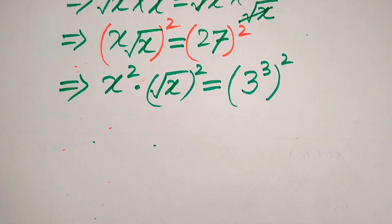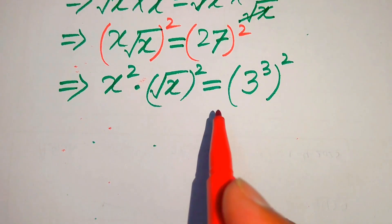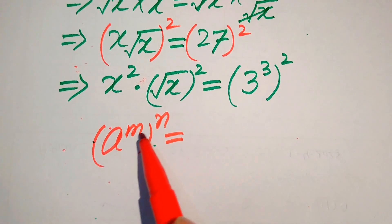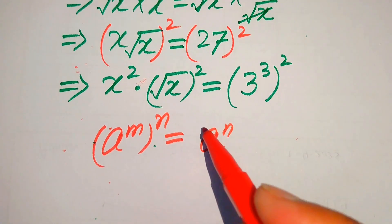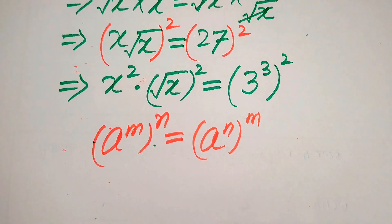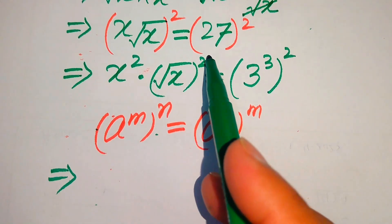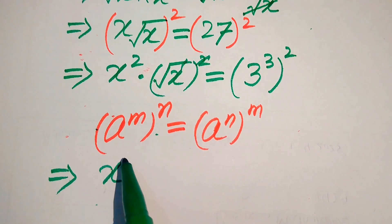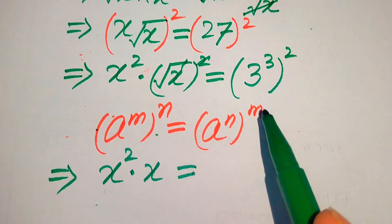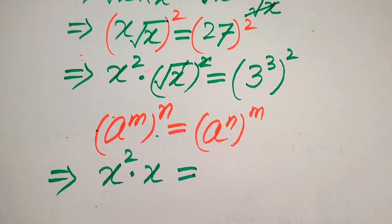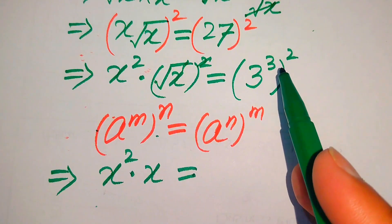In the next step we use the exponent law on the right hand side. You know that if we have a to the power of m, to the power of n, we can interchange these two exponents and it will be written as a to the power of m times n. So in the left hand side these two and the square root cancel and we get x squared multiplied by x. On the right hand side we interchange the two exponents and it will be written as 3 squared and its whole cube.